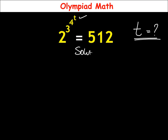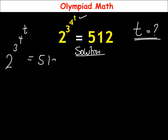To solve this, the equation is 2 raised to power 3 raised to power 4 raised to power t, equal to 512. Looking at this equation, 2 is the base on the left side. We are going to express 512 such that it also has a base of 2 with a power.